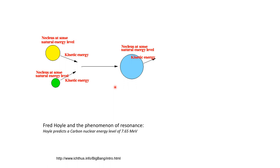You can understand resonance with an analogy: a child swinging on a swing at their natural frequency. If you want to make them swing faster, you have to time your pushes to their natural frequency. If you push at a completely different rate, they won't swing faster — they'll actually come to a stop. But when you push at the same rate as their swing, giving force every time they come back to the apex, that is resonance — it boosts how quickly and how far they swing.